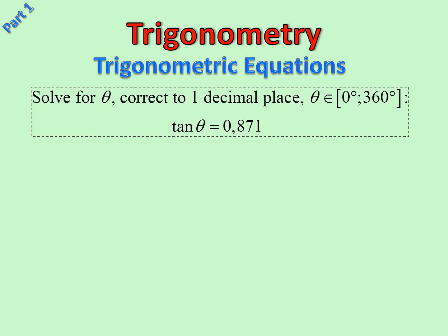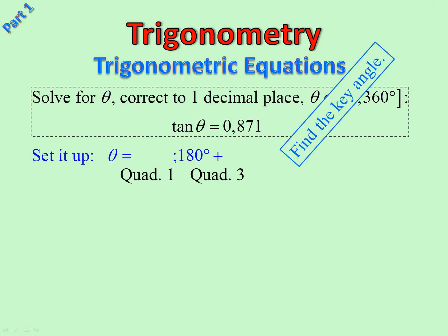Here we are. Another one. Tan θ equals positive 0.871. Step one: set it up. Where is tan positive? First and third. So I go [blank] and 180° plus [blank]. I'm going to find the key angle, and 41.1° was the key angle. So I slotted into my gaps I left, and there are my answers.